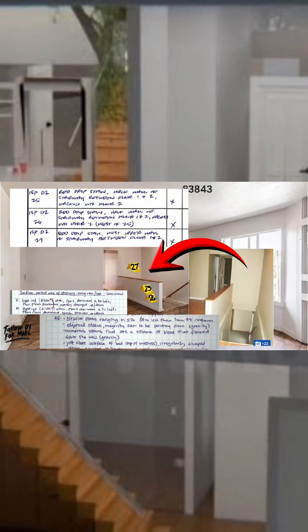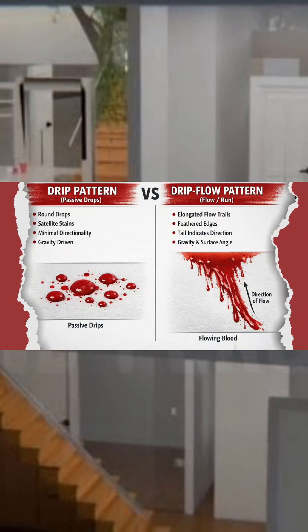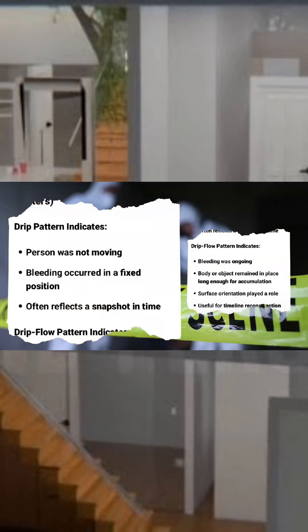Movement-wise, a drip pattern indicates no movement, while a drip flow pattern indicates blood movement. A drip pattern is instantaneous, whereas a drip flow pattern represents ongoing bleeding. In terms of interpretation, a drip pattern reflects static positioning whereas a drip flow pattern reflects continued bleeding relative to body position. That is the difference between those two.